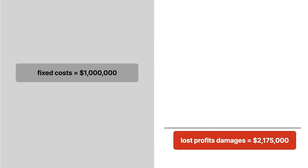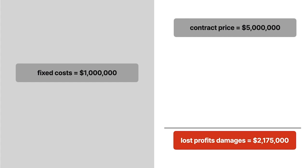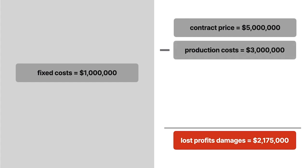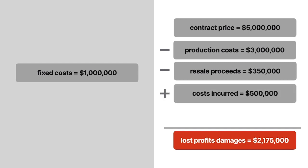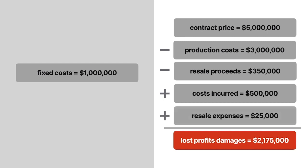Here, the manufacturer's lost profit damages were $2,175,000, derived from the contract price of $5 million minus $3 million in saved production costs and $350,000 in resale proceeds, plus $500,000 for component costs and $25,000 of resale expenses.